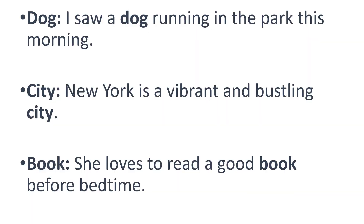Let's start with the types of nouns you might already know, such as dog, city and book. Let's see the sentences and figure out if we can see some other nouns as well. For example: 'I saw a dog running in the park this morning.' 'New York is a vibrant and bustling city.' 'She loves to read a good book before bedtime.' You might notice some other nouns as well, such as New York and park.